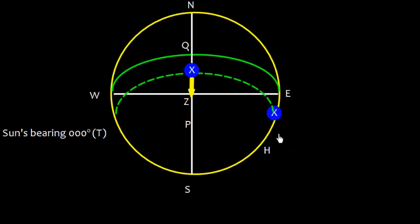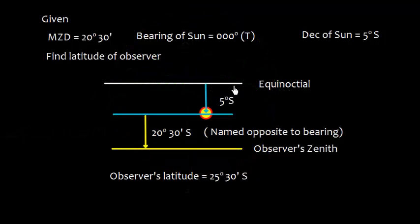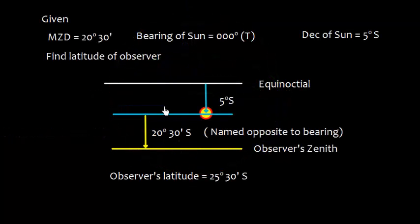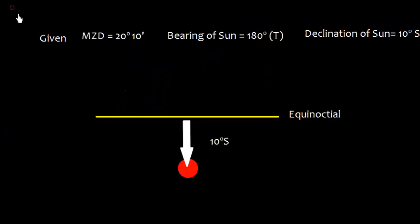The same information represented on the rational horizon diagram: north, south, east, west. Q to Z is the latitude we need to obtain. The declination is Q to X, which is 5° south — that is, from the equinoctial to the celestial body. The zenith distance from X to Z is 20°30' South, which is opposite to the bearing of north. The observer is at the center, the body is to the north, so the zenith distance is named south.